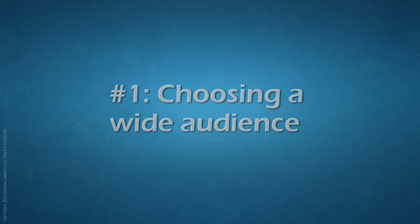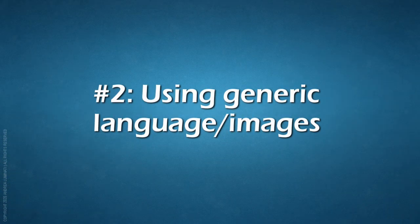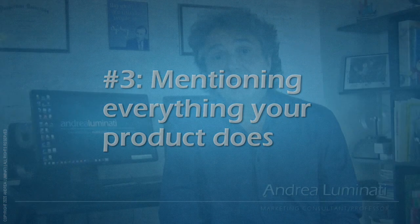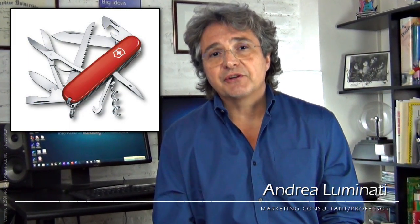So, what are the signs that perhaps you're using a Shotgun approach? Number one, you've probably selected a very wide target audience because you don't want to leave anybody out, any potential customers. Number two, you're probably using some very generic language and or images in your advertising, because you want to hit as many potential interests as possible. And number three, you're probably mentioning every single thing your product does in your advertising because you don't want to leave anybody out, and God forbid you might lose a potential sale.